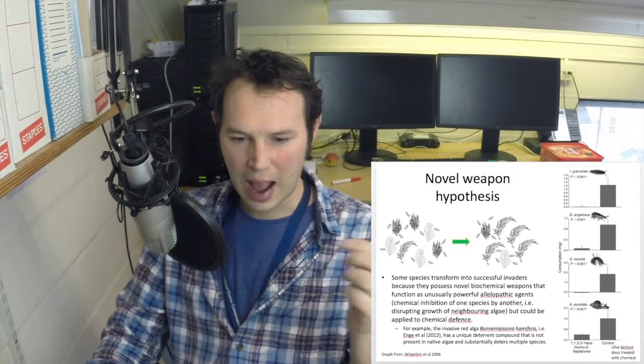That actually supports a slightly alternative hypothesis to the EICA which is known as the novel weapon hypothesis. Basically it suggests that some species have a chemical weapon that has never been seen before. This study here by Engel et al. 2012 suggests that that is true for these red alga species Bonnemaisonia hamifera. Here you can see in this study that this particular compound 1,1,3,3-tetrabromo-2-heptanone has never been seen before by these grazers in the native range of the grazer, the invaded range of the alga. And that by exposing those grazers to that anti-herbivore compound they are massively deterred from grazing upon particular substrate containing that compound. However the control are quite happy to consume it. So having a novel chemical defense seems to release Bonnemaisonia hamifera from pressure from grazers and that novel weapon there is essentially an extension of the EICA.